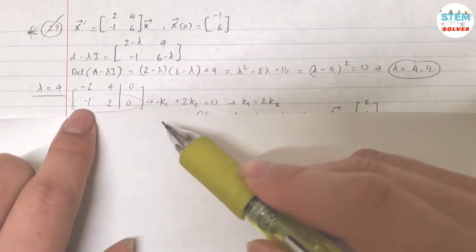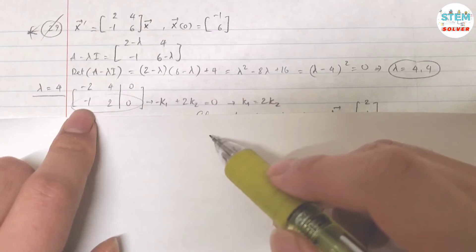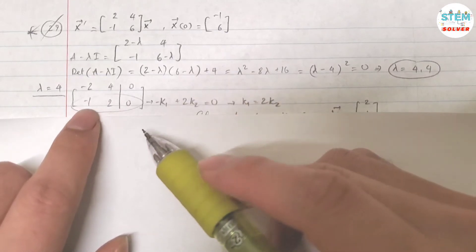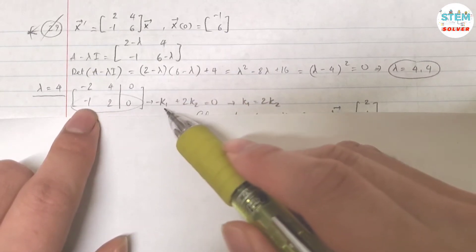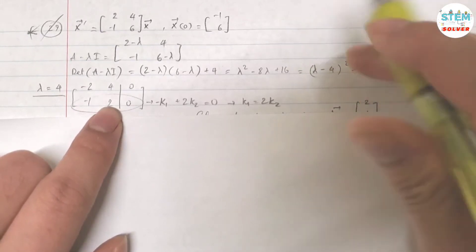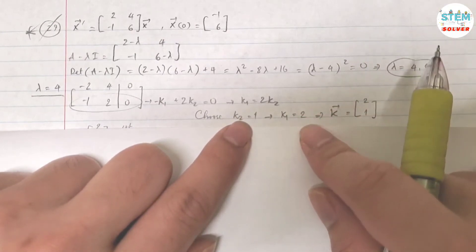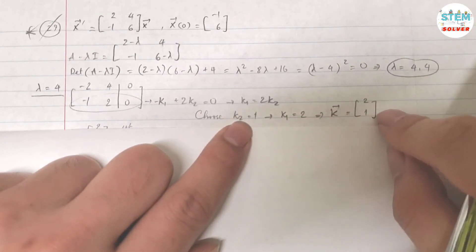You can reduce this down to base matrix but I think it's just wasting your time. So using this directly, I have negative k1 plus 2k2 equals 0. Solve for k1, I got 2k2. If I choose k2 equals 1, then k1 is 2. And my vector k is [2, 1].